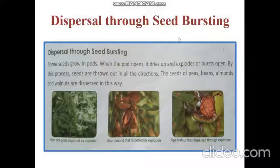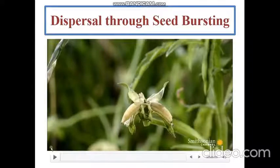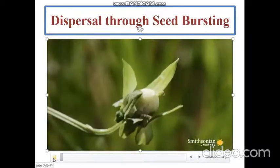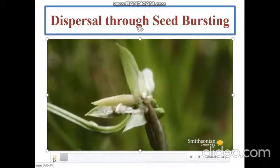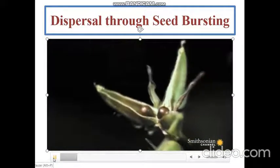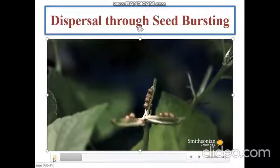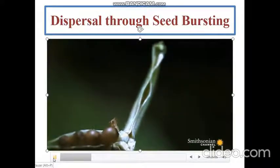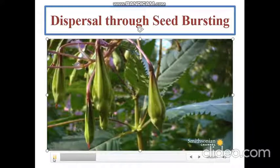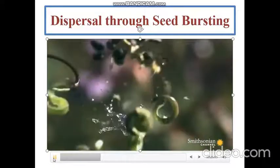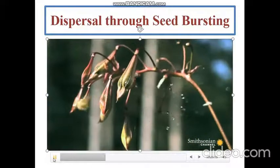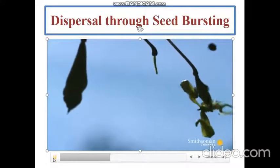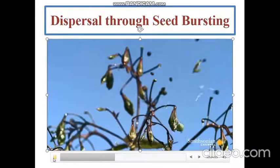Let's end this session by watching a video that shows dispersal through seed bursting. You can see how the pod is bursting — it dries up and the seeds simply start exploding and bursting out. Here you can see the touch-me-not plant: when just a drop of water touches it, it explodes and all the seeds simply come out and travel long distances.